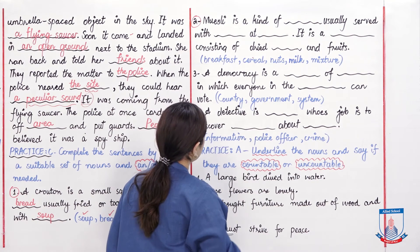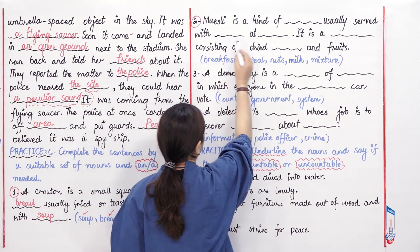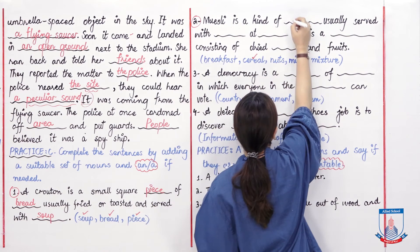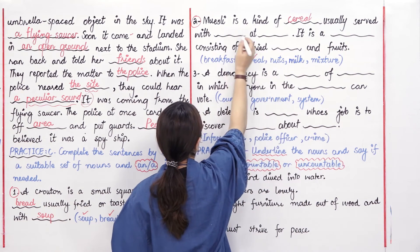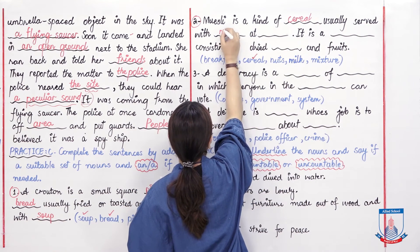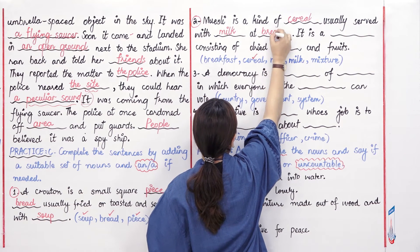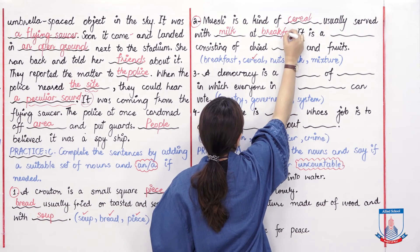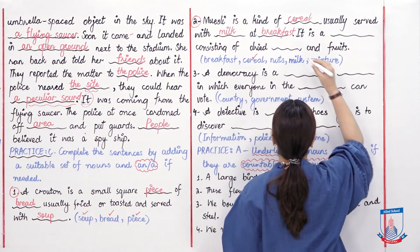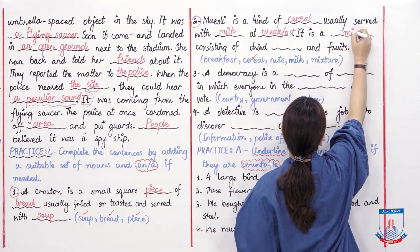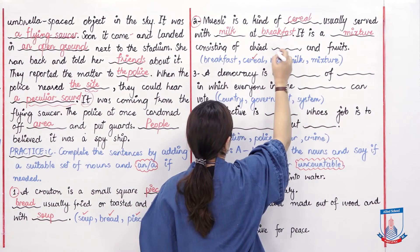Number two: 'Muesli is a kind of cereal, usually served with milk at breakfast.' It is a mixture consisting of dried nuts and fruits.